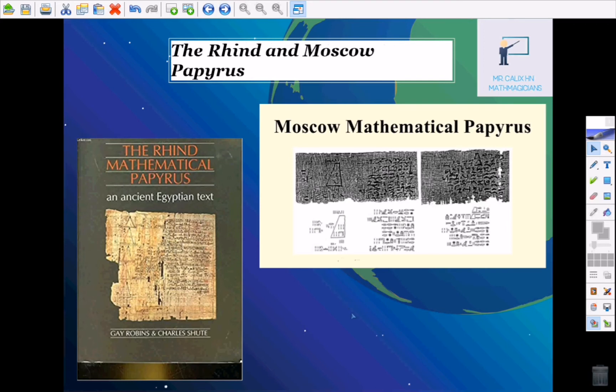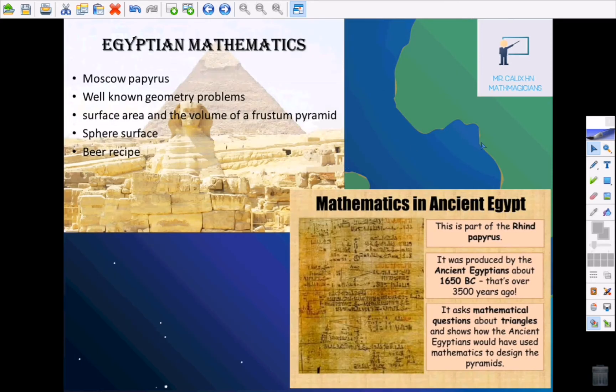We continue with the Rhind and Moscow Papyrus. The Rhind and Moscow Papyrus had collections of problems that are quite a feat from an intellectual point of view. Important fact is that they wrote from right to left. Now here you have two examples of what they were. The Moscow Papyrus, well known for geometry problems, surface area and volume, and sphere surface. The Rhind Papyrus asks mathematical questions about triangles and shows how the ancient Egyptians would have used math to design the pyramids.